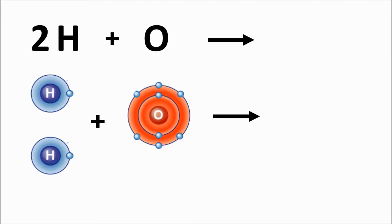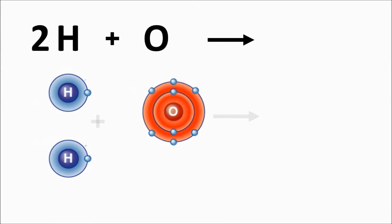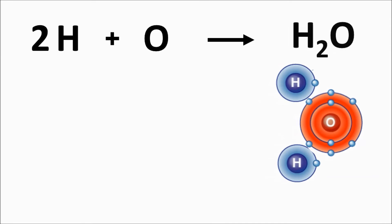When atoms are rearranged in a chemical reaction, they make new substances with different properties. These substances also have different chemical formulas. This is what makes chemical changes chemical.